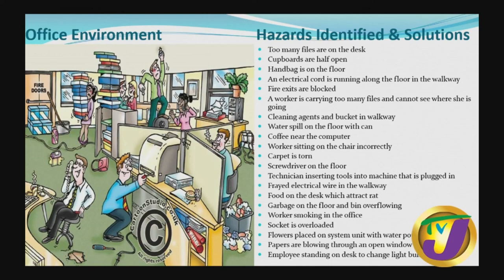There is a split in the carpet with a can, so the worker can fall and be injured. Water is spilled on the floor. Coffee is near the computer, which is a no-no — no eating or drinking near the computer. Workers are sitting on chairs incorrectly. There is an overloaded socket, and there are plants on the system unit with water pouring out. Papers are blowing through an open window. Employees are standing on desks attempting to change a lightbulb — we should not do that; we should use step ladders and have someone with technical know-how do the changing.